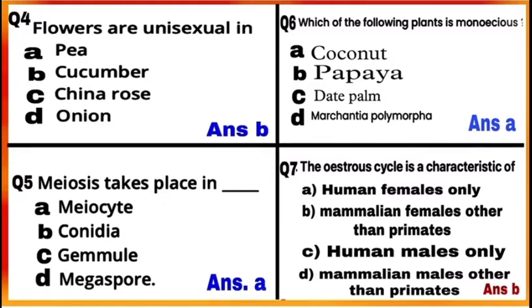Question 7: The estrous cycle is a characteristic of non-primate mammals like cows, sheep, rats, deer, dogs, tigers, etc. So the answer is B — the estrous cycle is a characteristic of mammalian females other than primates.